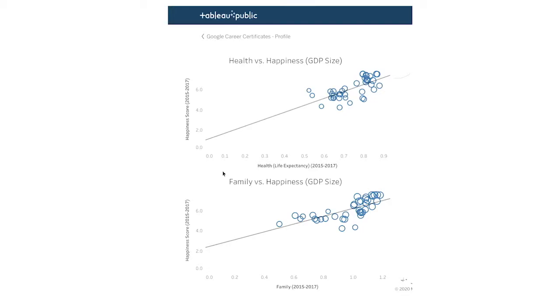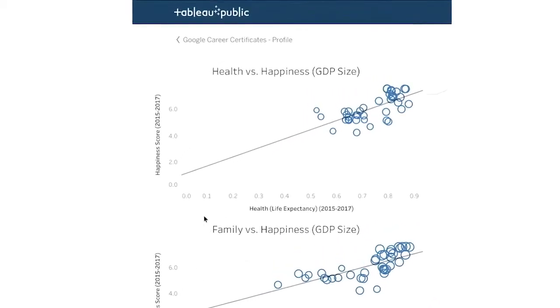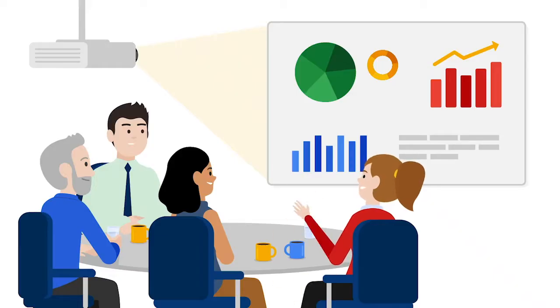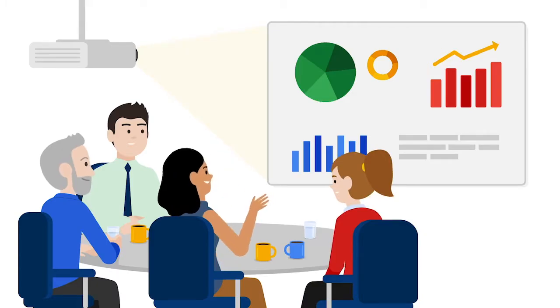Let's revisit the happiness data viz for an example. Each of these scatter plots show the relationship between a country's happiness score and one of the factors that contributes to that score. The health versus happiness scatter plot shows a strong relationship between the life expectancy of people living in a country and how happy those people are — basically, as life expectancy increases, so does their happiness score. A successful data visualization results in a happy audience, so it's important to understand how your audience is viewing your data visualizations. It all starts in the brain. When processing information, our brains try to find patterns and rely on visual context. As data analysts, we can use our understanding of the human visual system to produce better visuals.